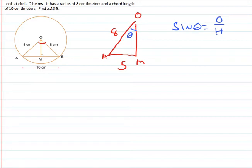So let's set that up. Let's go down here. We're going to say sine of theta equals opposite of our angle is here. So 5 and our hypotenuse we know is 8.